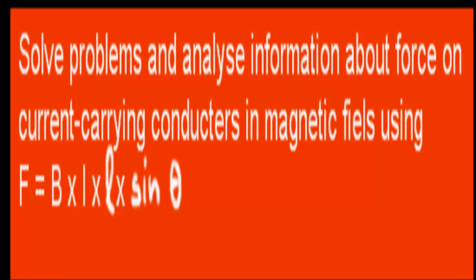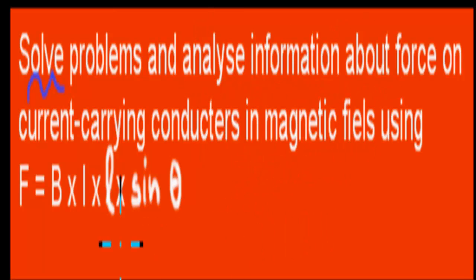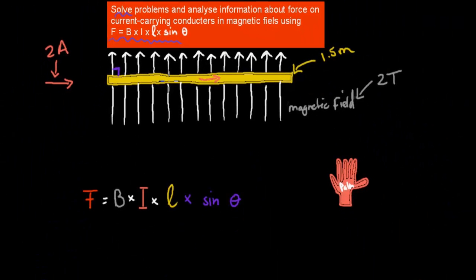Welcome back. In the last video we looked at the variations in the formula to see how different factors affect the force being produced. In this video we're going to solve problems and analyze information about force on current-carrying conductors in magnetic fields using F equals B times I times L times sine theta. So in this case we discussed the factors; now we're going to make some calculations using the same formula.